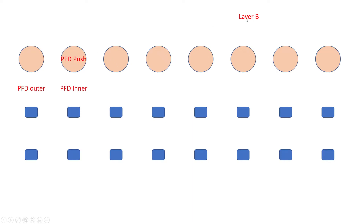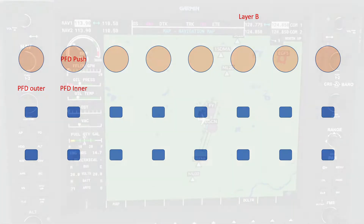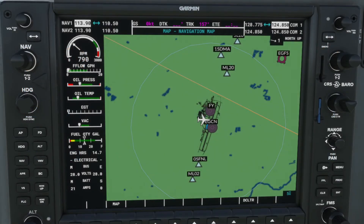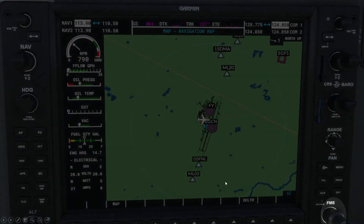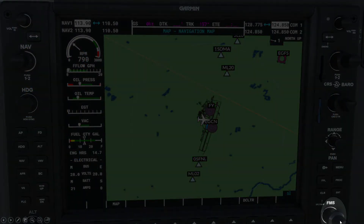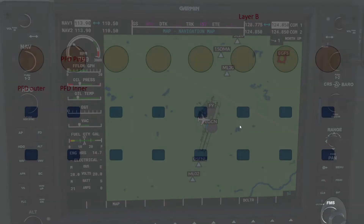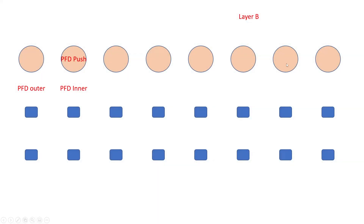The next one to allocate is the FMS button on the right-hand display, the MFD. And we'll do exactly the same over here — allocate the outer, the inner and the push switch.